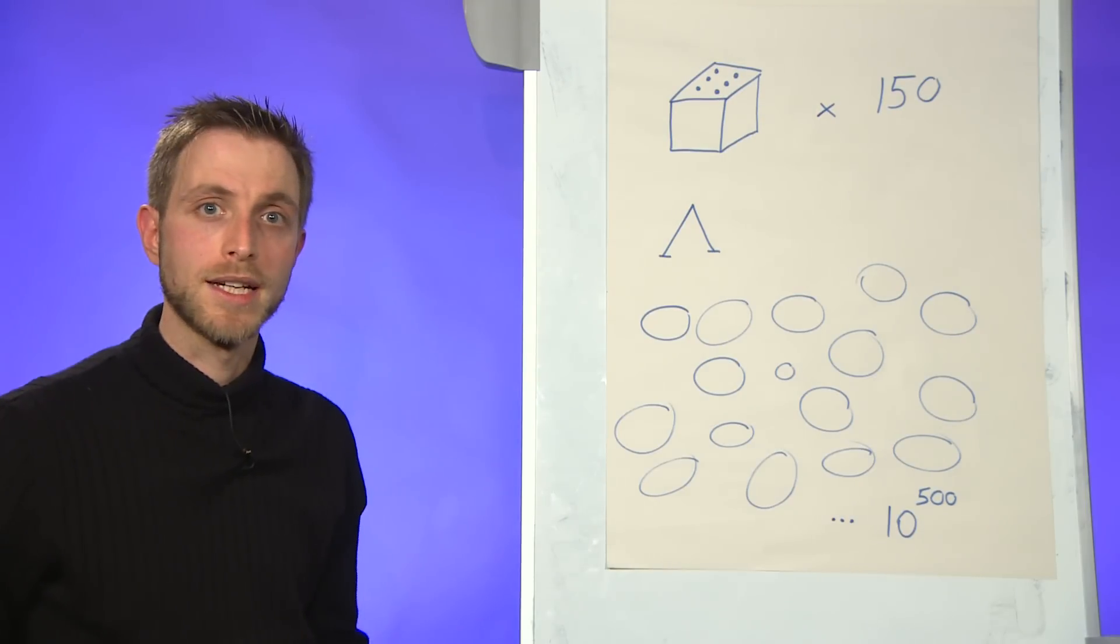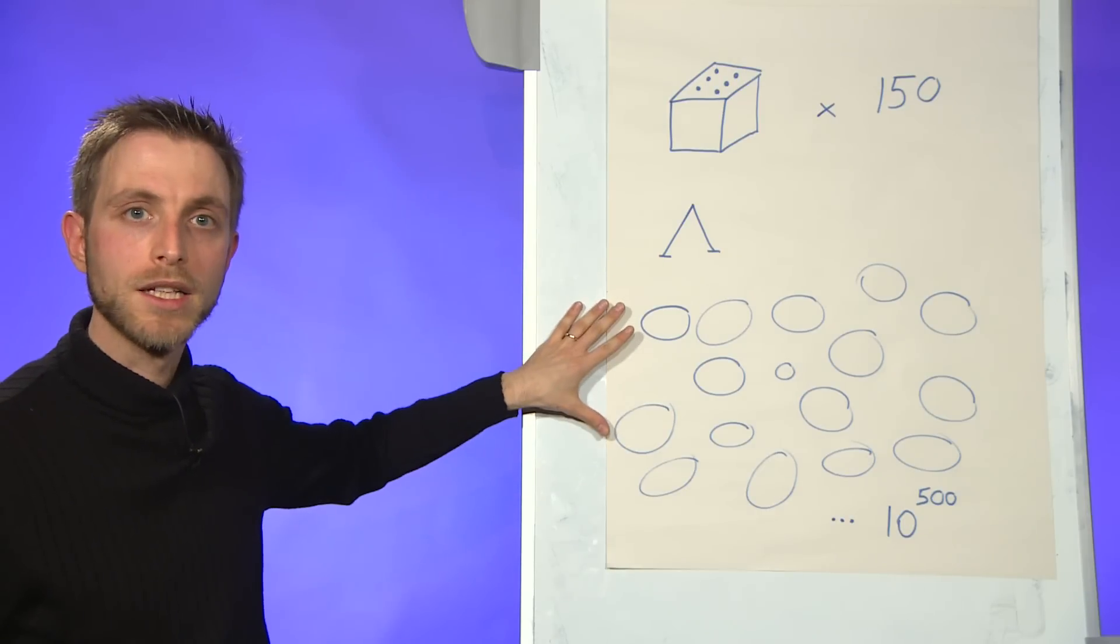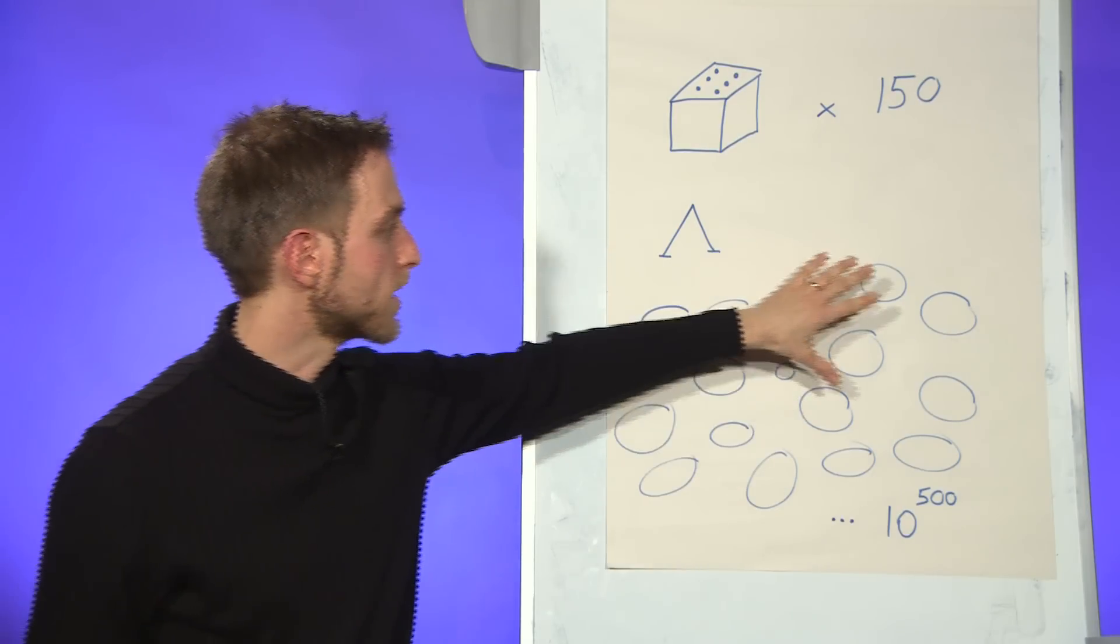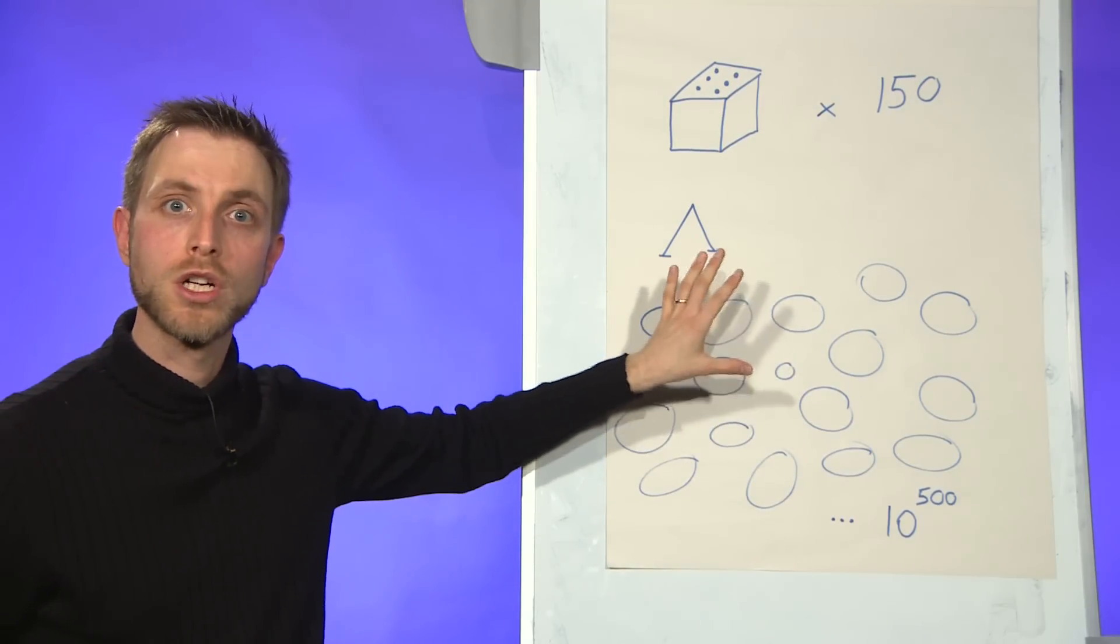One possible answer comes from string theory, which postulates that we're actually part of a much grander reality called the multiverse, in which different universes coexist, up to 10 to the 500 of them, all with different values of the cosmological constant.